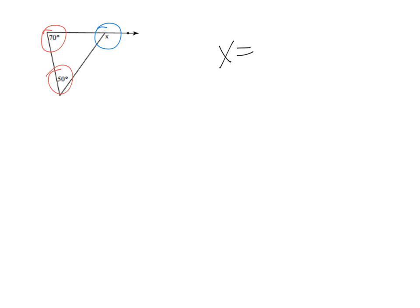As noted, I have two interior angles of a triangle, and I know because of the EAT — exterior angle theorem — that the two interior angles of a triangle equal the opposite exterior angle. So to answer this I'm going to do 70 plus 50, and I know 70 plus 50 equals 120, so x equals 120 degrees.